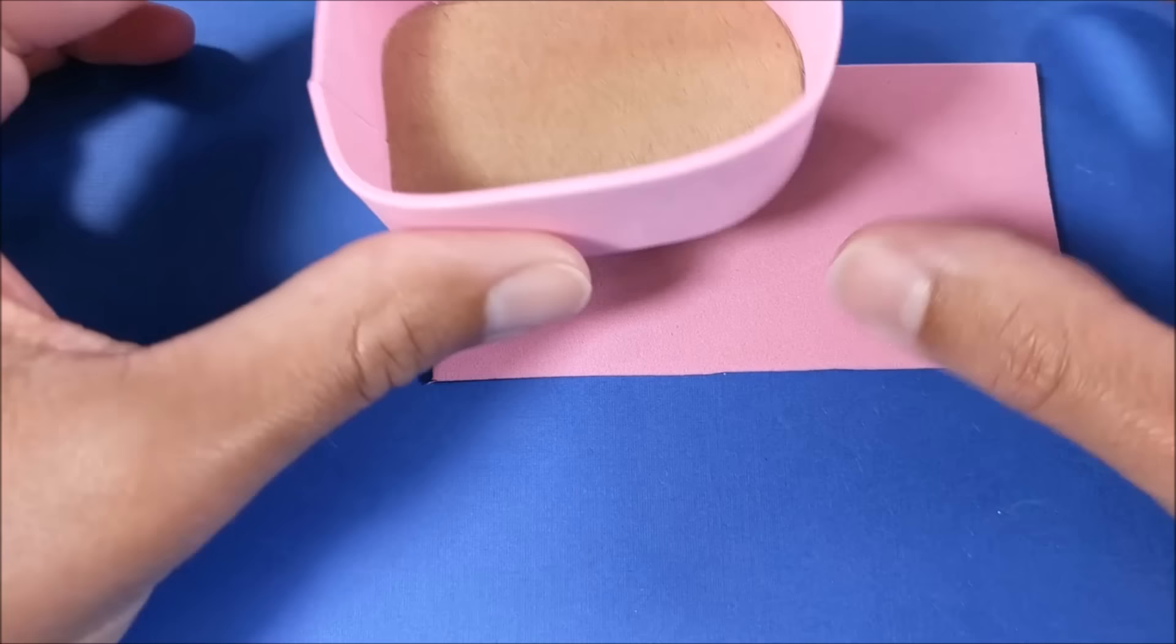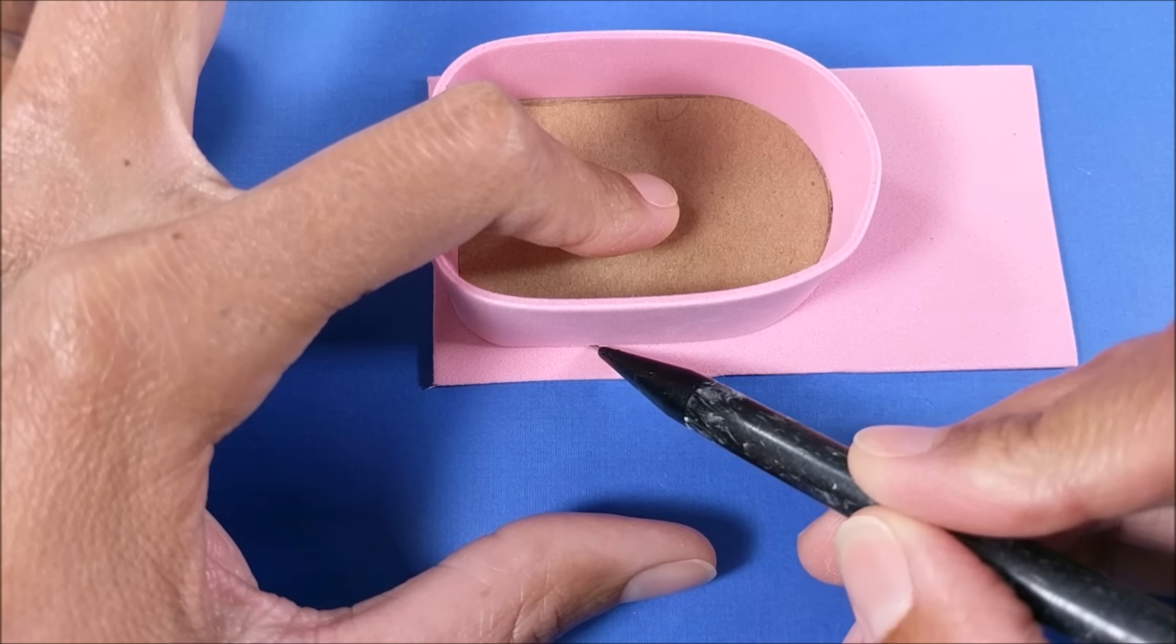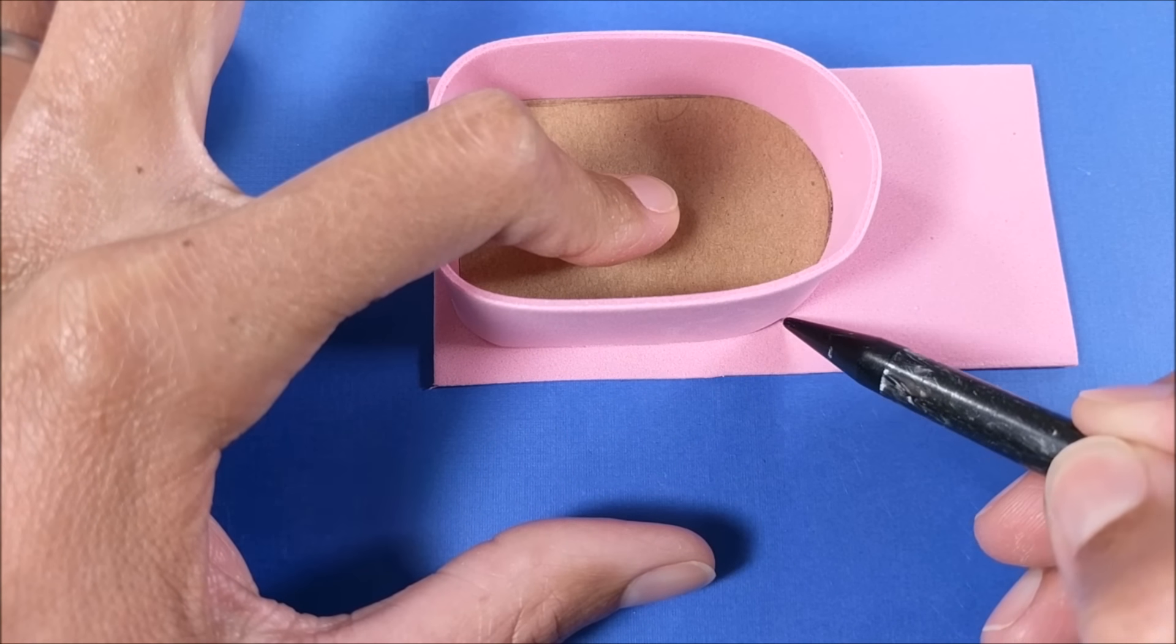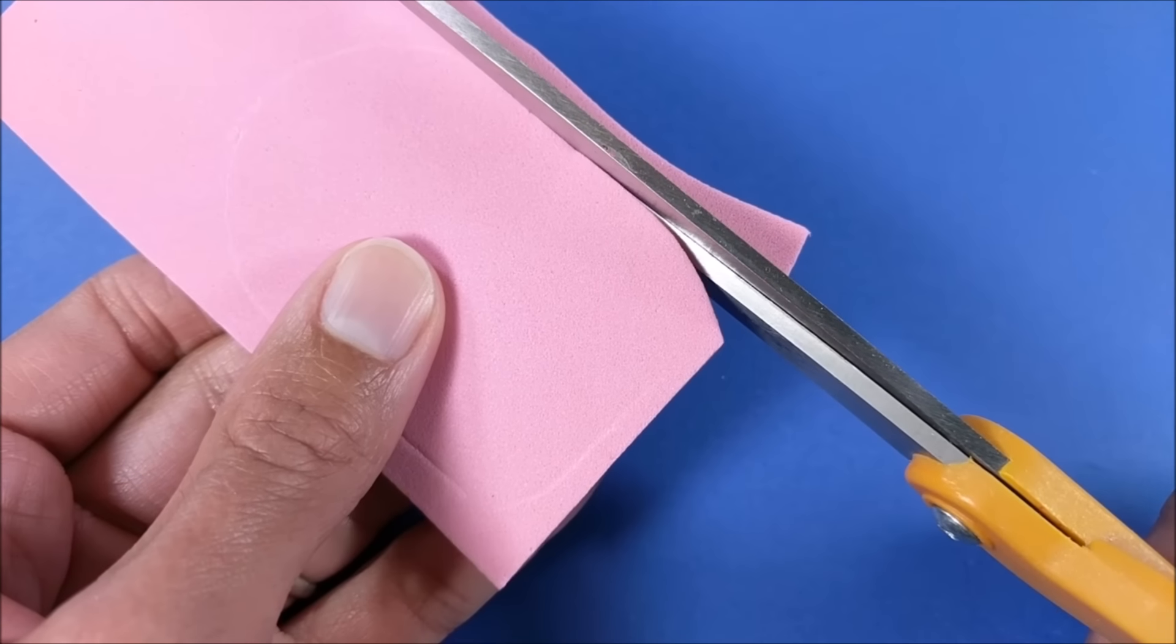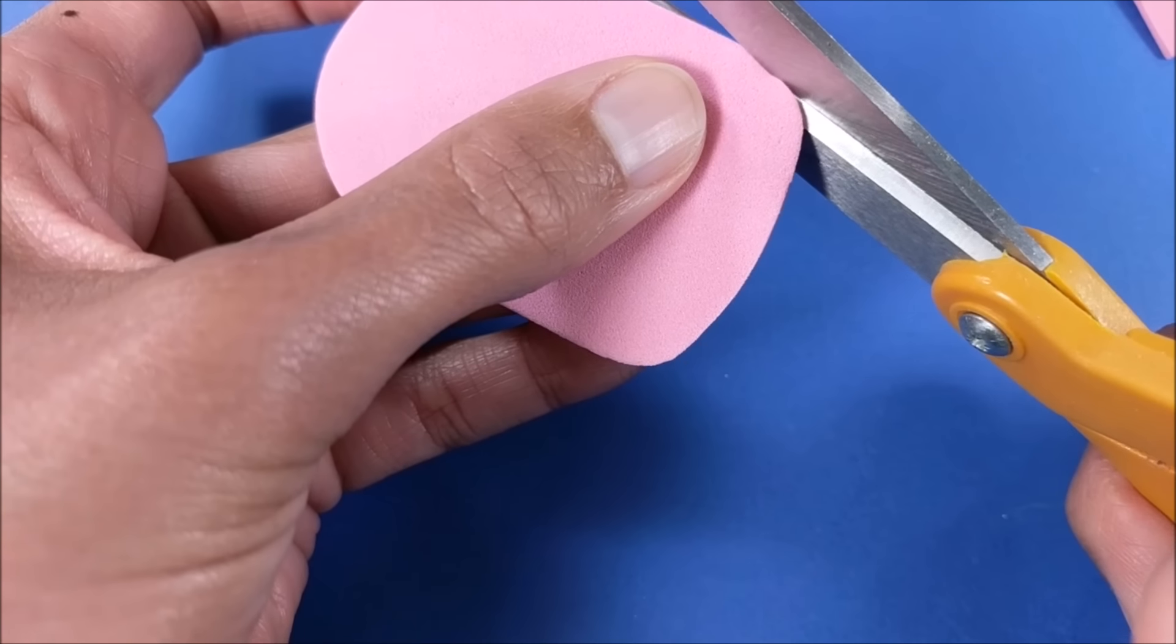Next I trace it on more kraft foam, but as I cut it out I want it to be narrower than the baby carriage.